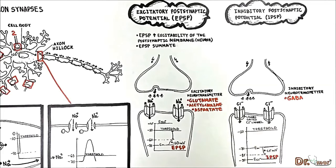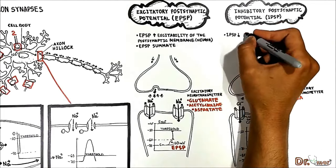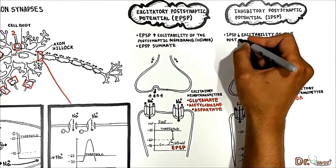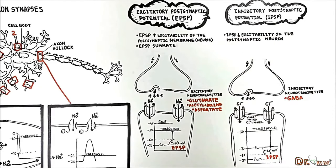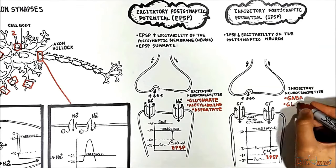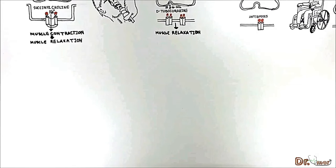This 15 millivolt hyperpolarization is referred to as the inhibitory postsynaptic potential (IPSP). The IPSP takes the membrane potential away from threshold, thus decreasing the excitability of the postsynaptic neuron and making the neuron farther from firing an action potential. In addition to GABA, inhibitory neurotransmitters include glycine.